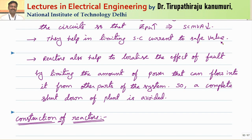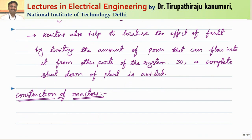Increasing Z per unit ensures the short circuit MVA does not exceed the rating of existing circuit breakers. Another advantage of using reactors is that they help limit the short circuit current to a safe value, so that transmission line conductors and other equipment will not be damaged due to overloading. This also helps localize the effect of a fault by limiting the power that can flow into the fault from other parts of the system.